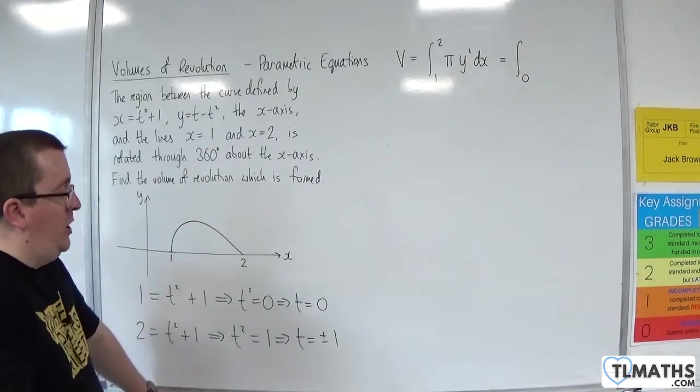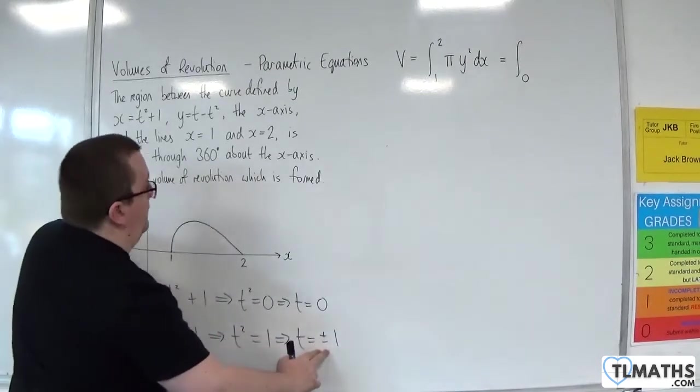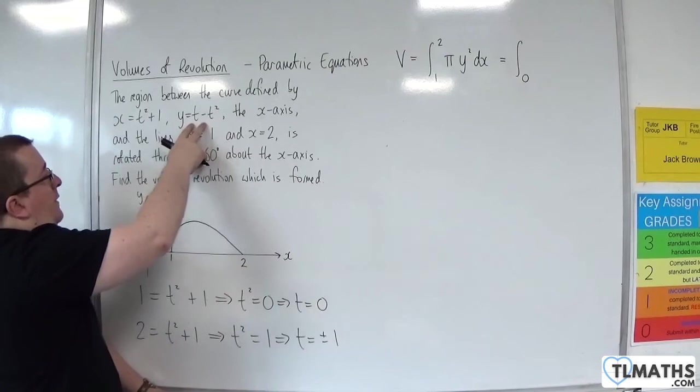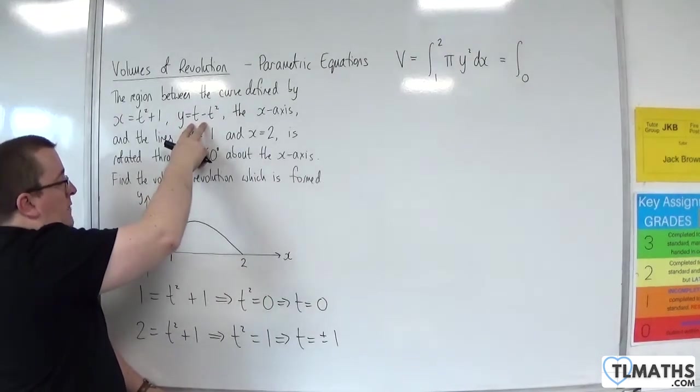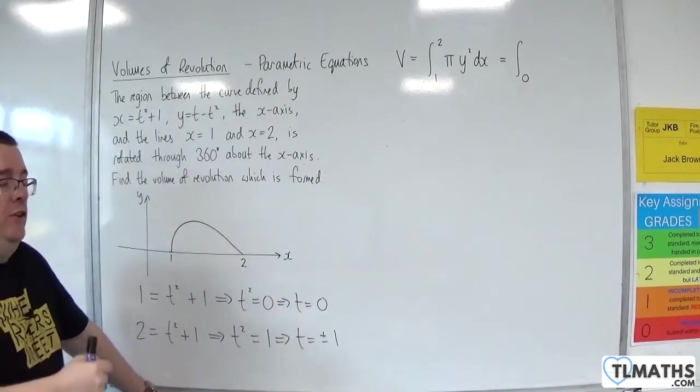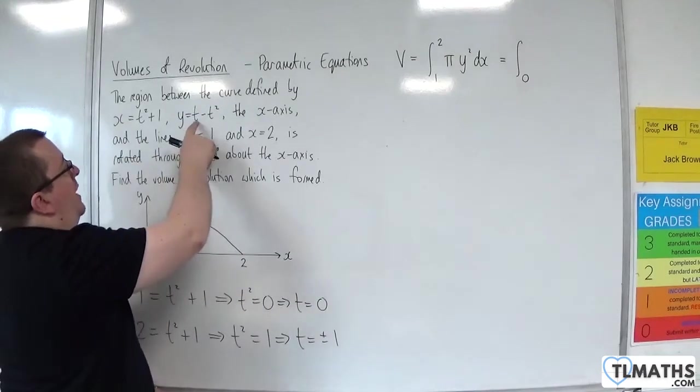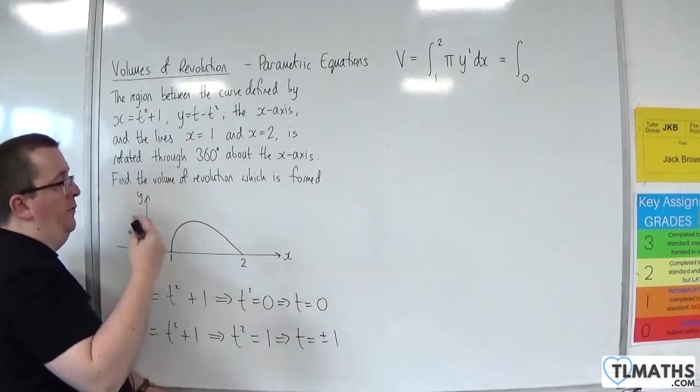In order to check, we substitute the two t values back into this, into the y values, to confirm that we are actually on the x-axis. So we need y to be 0. When t is 1, we get 1 take away 1, which is 0. So that's all good.